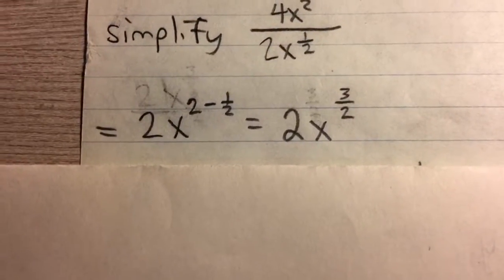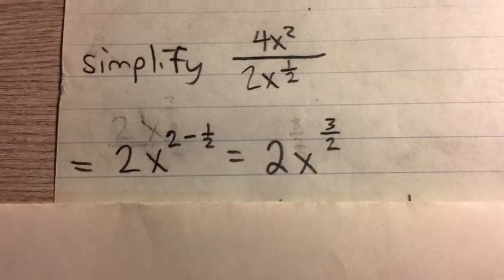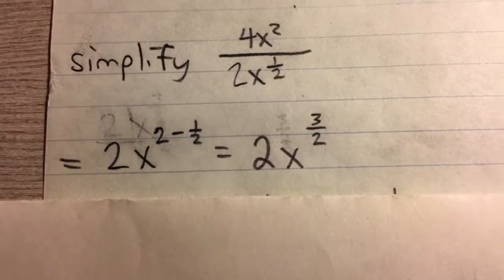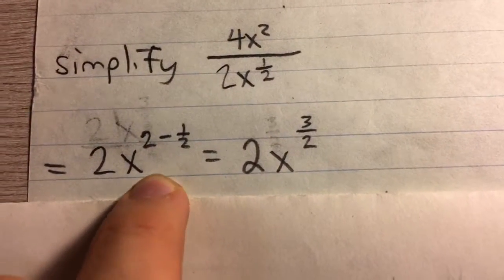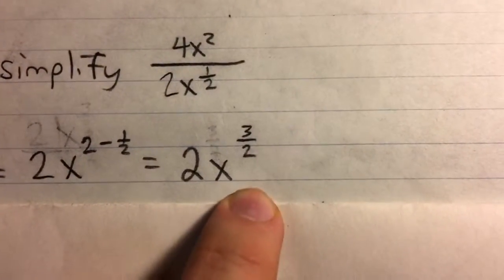Before, when we multiply, if we have two x terms multiplied by each other, we added the exponents. Now we subtract the exponents. So 2x to the 2 minus 1 half, which is 2x to the 3 over 2.